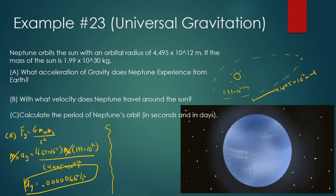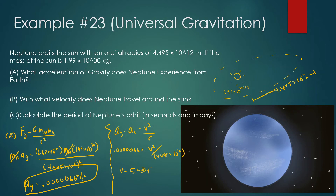The question now is: with what velocity does Neptune travel around the Sun? We know the acceleration of gravity equals the centripetal acceleration, which is v squared over r. So 0.0000006.66 equals v squared divided by 4.495 times 10 to the 12. Solving — taking the square root — we get a velocity of 5,434 meters per second.